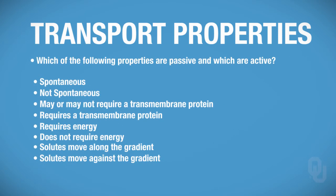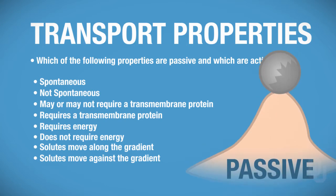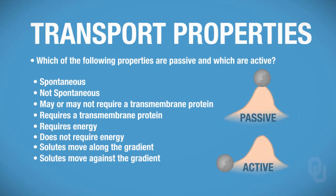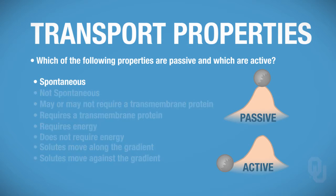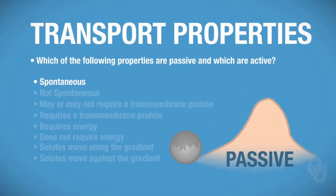Let's go ahead and go through these. If you've already paused the video, you're ready to check your answers. Remember, if we're dealing with passive movement, think of a rock sitting up on top of a hill. A spontaneous property means it's just going to happen — that rock is just going to come down the hill on its own. So spontaneous is a form of passive transport.